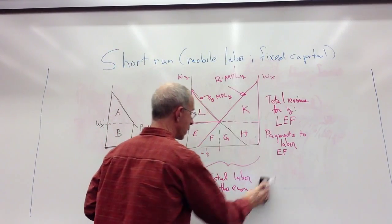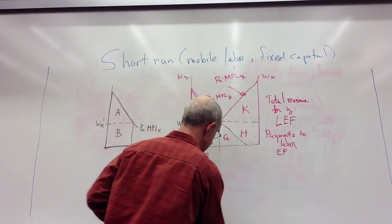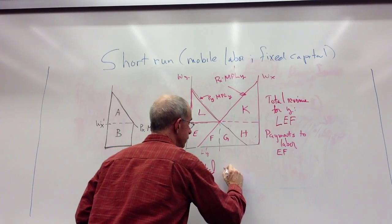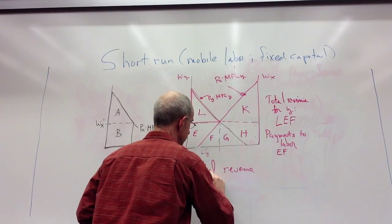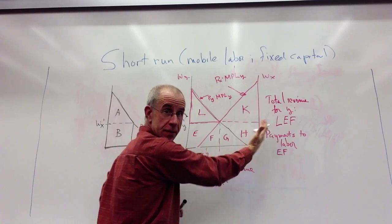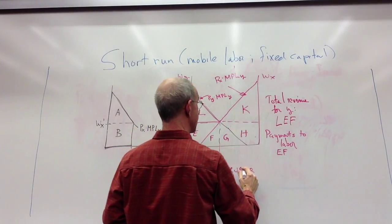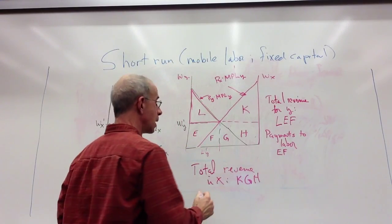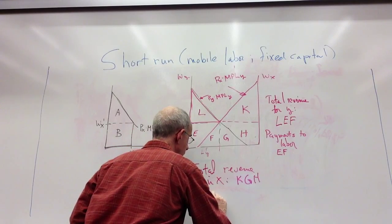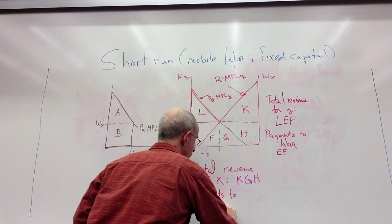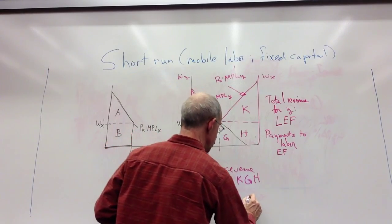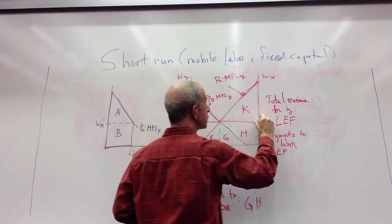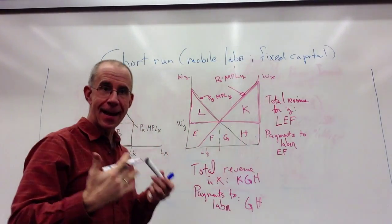The payments for X are done in a similar way. The total revenue in X is the area under the demand curve. Now we're measuring it from this axis over here, but it's the same idea. That is K, G, H, the payments to labor are G and H. So K is the payments to capital in the X sector.